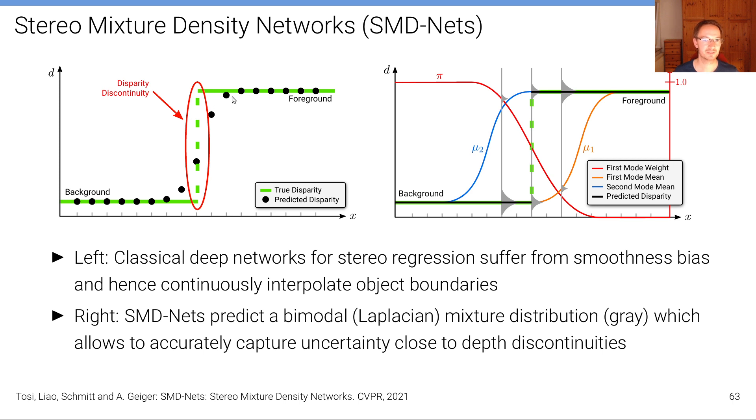On the left we see as an example a classical deep network for stereo regression that suffers from the smoothness bias and hence continuously interpolates object boundaries. So we see in green the true disparity but the best this model can do is to predict these black dots here which you can see are smoothly transitioning from the background to the foreground. On the y-axis we have the disparity and here on the right we have this mixture density network that predicts a mixture distribution. So at each x location, here this is the image column for a particular image row, we predict a bimodal distribution in this case over the disparity values.